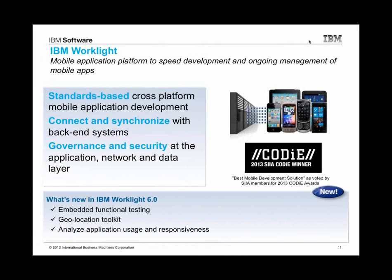Worklight is the IBM mobile application platform. It's for people planning to develop for multiple platforms. It is a multi-tier system — it not only helps you build the client that runs on the phone, the mobile app, but also the middleware that's needed to do the secure mediation between all your back-end systems. It's standards-based, built right on top of the native tool. So if you're currently developing with Xcode for iOS, this builds on top of that. If you're building for Android using the ADT, this builds on top of it.